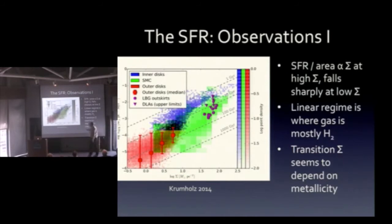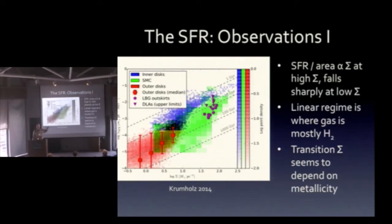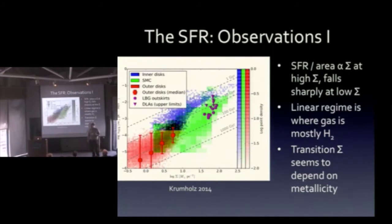Focusing first on solar metallicity galaxies near the Milky Way: here's gas surface density versus star formation rate surface density. At high surface densities there's a roughly linear correlation, but as you go to lower surface density you get a sharp drop-off, and then flattening again. This sharp drop-off occurs at a characteristic surface density of about 10 solar masses per square parsec, associated with the transition from the ISM being dominated by molecules to dominated by HI.